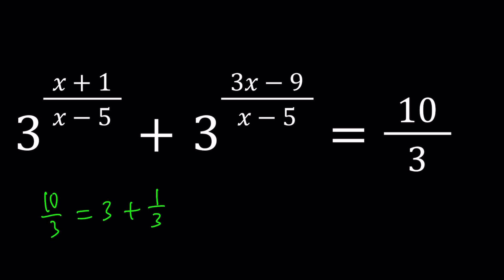So 10/3 is basically 3 plus 1/3. And that is significant because 3 is 3 to the first power and 1/3 is 3 to the power negative 1. So when you set that equal to a sum of powers of 3, you kind of get like two sums.